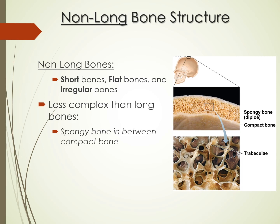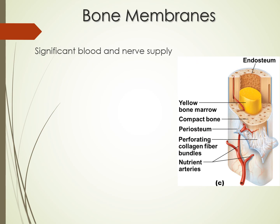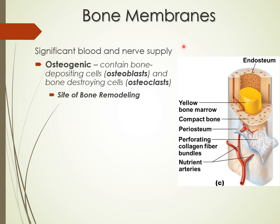Non-long bones — short, flat, and irregular — have a simpler structure. They just have compact bone on the outside and spongy bone on the inside, without a medullary cavity or yellow bone marrow. Much less complex than long bones.